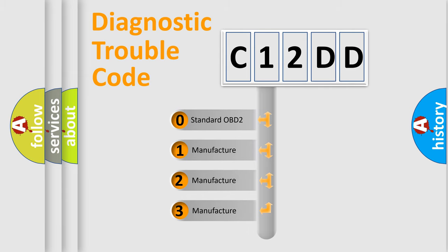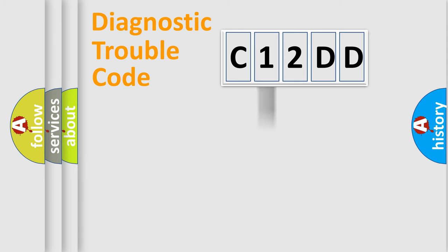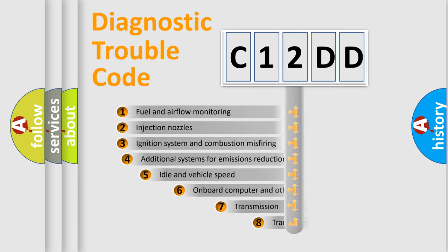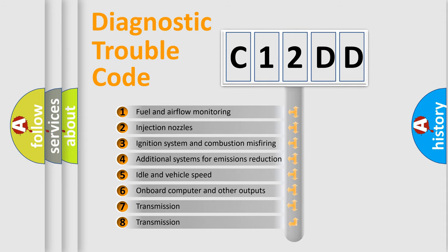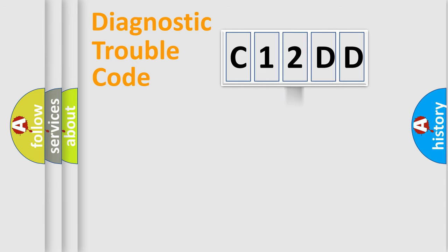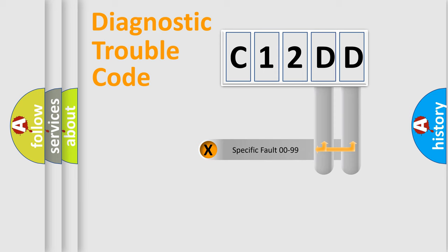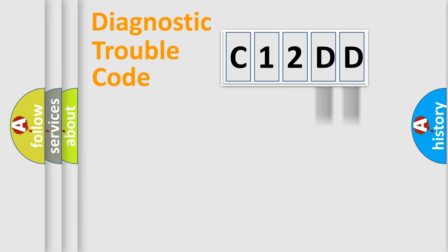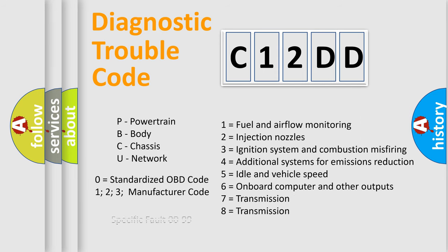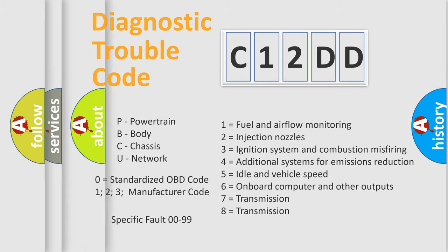If the second character is expressed as zero, it is a standardized error. In the case of numbers 1, 2, or 3, it is a more manufacturer-specific expression of the car error. The third character specifies a subset of errors. This distribution is valid only for the standardized DTC code. Only the last two characters define the specific fault of the group, and this division applies only when the second character is zero.